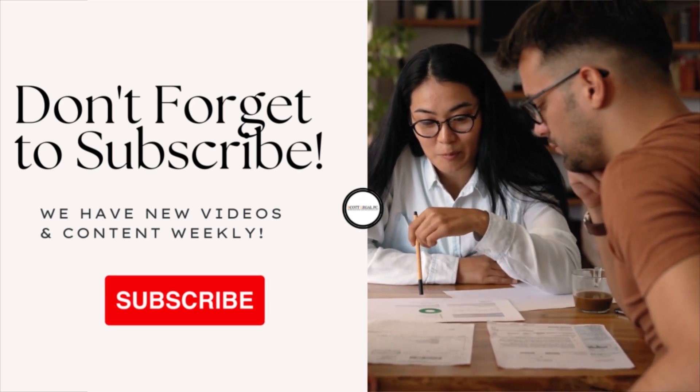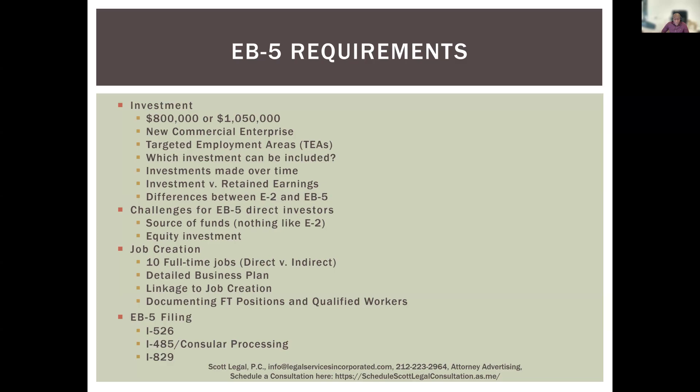In terms of petitions filed, there are three main ones. First is the I-526, which shows that you've invested the money — $800,000 or $1,050,000 — and have the ability to create the jobs. The second is either consulate processing if you're outside the United States, or an I-485 adjustment of status petition if you're inside the United States. The benefit of the I-485 is that you can apply for work authorization and travel authorization while in the U.S. Two years after you get the green card, you file an I-829 petition to remove conditions and show that you've actually created the 10 full-time jobs.